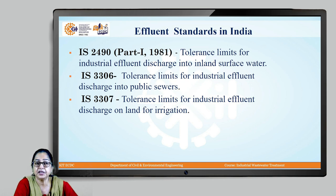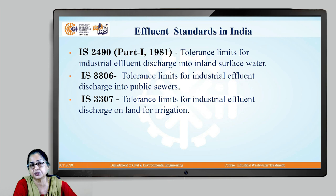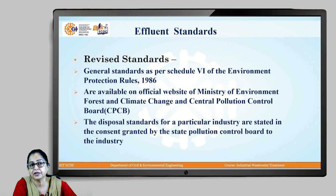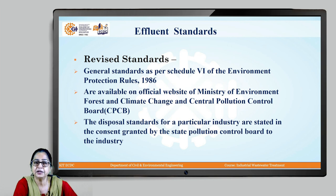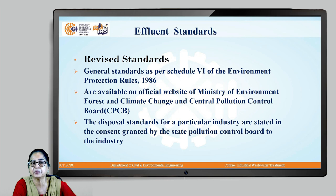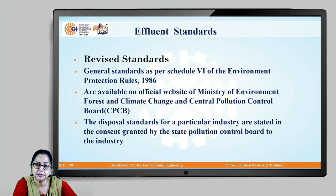Various effluent standards in India: earlier it was IS 2490, IS 3306, and IS 3307. The most important was IS 2490, published in 1981. With the establishment of the Ministry of Environment, Forest and Climate Change, the standards have been revised and general standards are given as per Schedule 6 of the Environment Protection Act. Using these standards as guidelines, the State Pollution Control Board specifies various standards for different parameters of wastewater for any industry while granting consent under the Water Act.